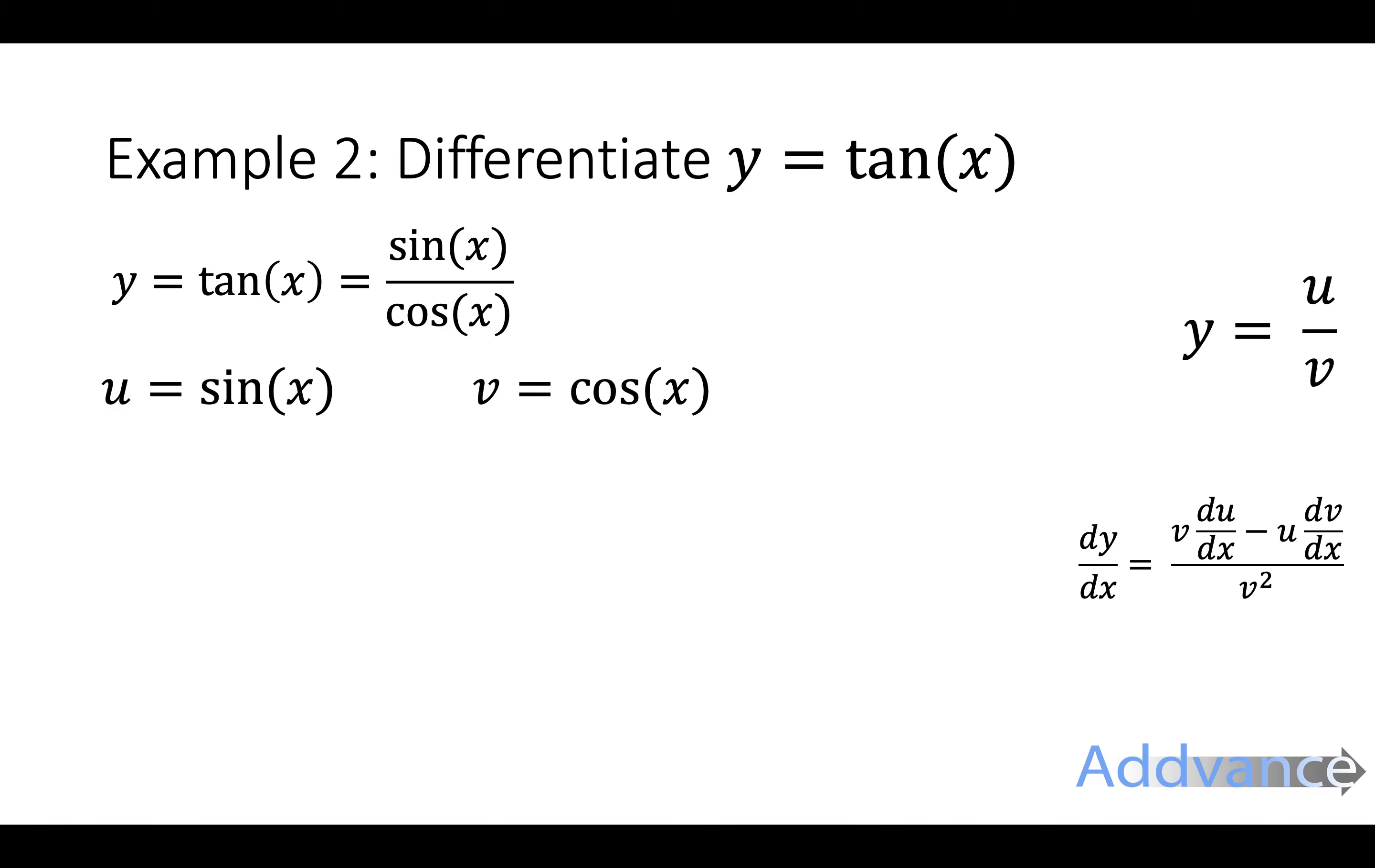So we've got the u and the v. u is sine of x and v is cos of x. Again it's the top and the bottom of the fraction. And that's the whole point of changing tan of x into sin of x over cos of x. Because now we can use this quotient rule because it is a divide. It is a quotient.